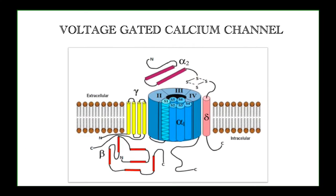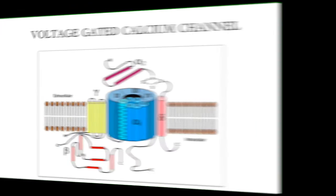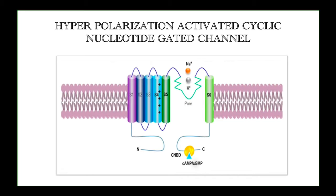The voltage-gated calcium channel is a relatively complex type, having alpha, beta, gamma, and delta segments. The alpha-1 segment is the most important component, formed of four subunits, the first of which is further divided into six units — this is the main channel through which ions move. The gamma and delta form a side chain built inside the membrane, while alpha-2 and beta segments are located outside and inside the membrane respectively. This intricate arrangement helps in selective absorption of calcium ions inside the cell.